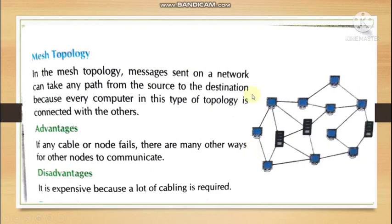In mesh topology, there is no particular structure — every computer is connected to every other computer in the network. Messages can take any path from source to destination, finding the shortest available route. Advantage: if any cable or node fails, there are many other paths for nodes to communicate, unlike ring topology where there would be no alternative route. Disadvantage: it is expensive because more cabling is required.